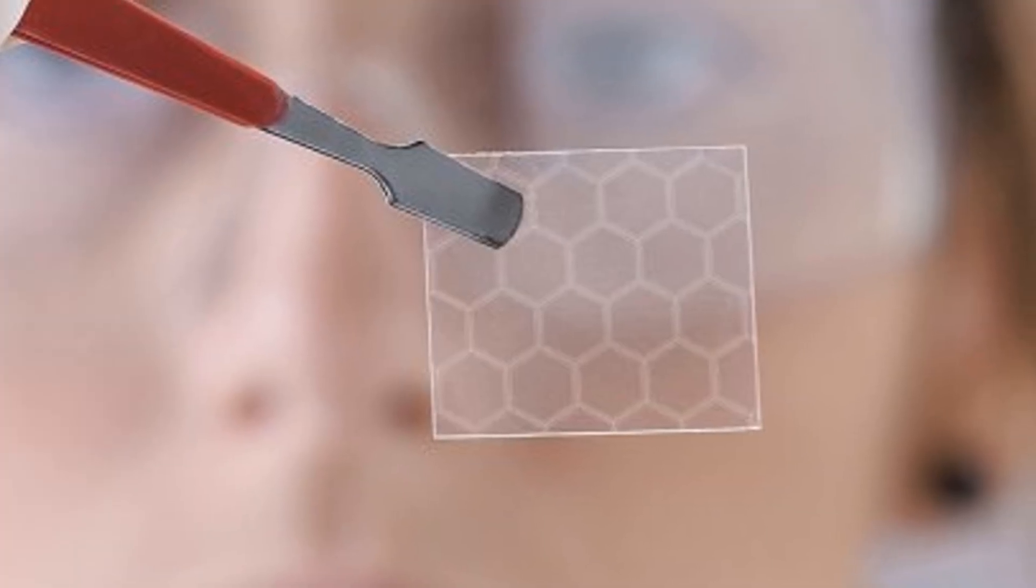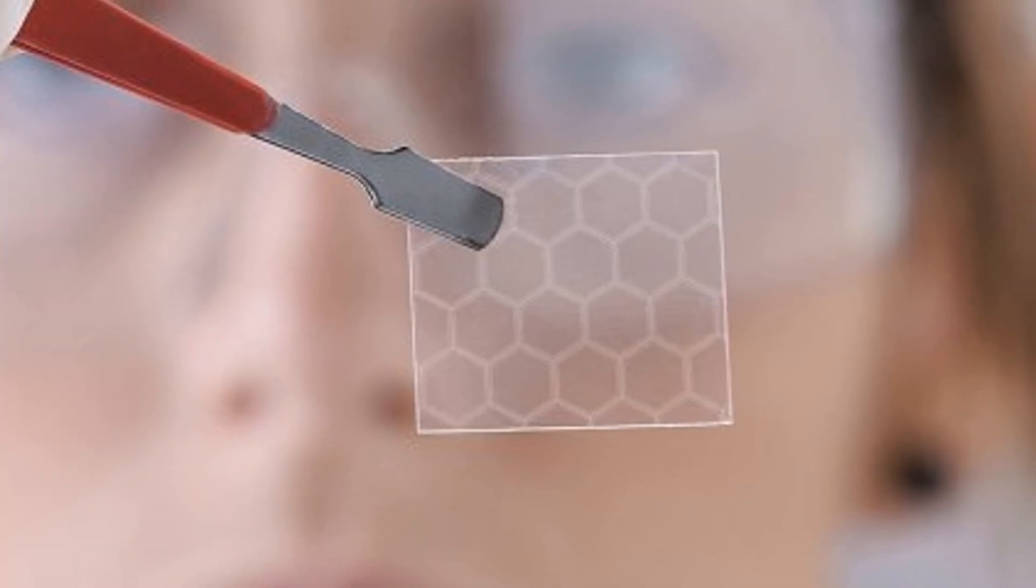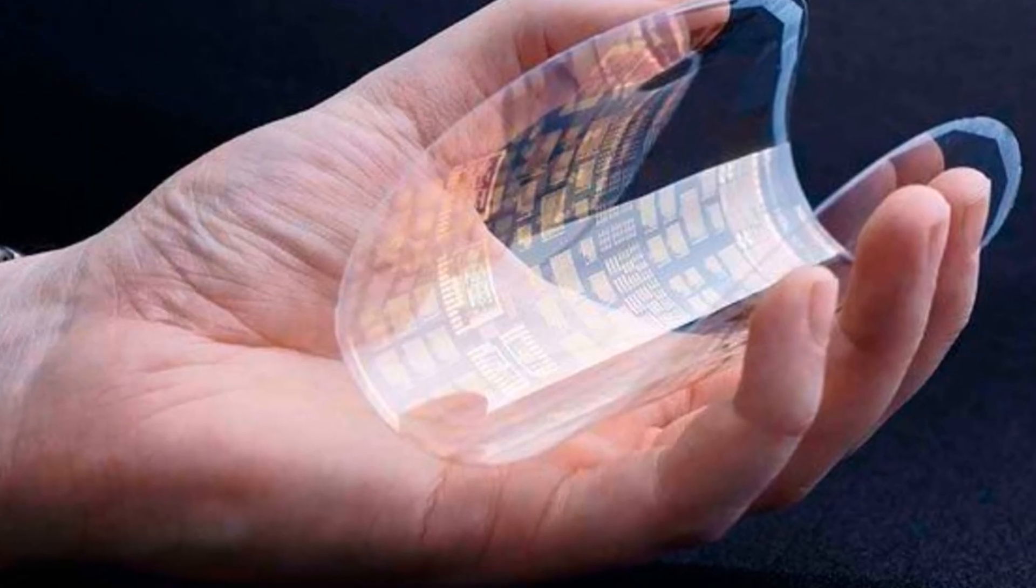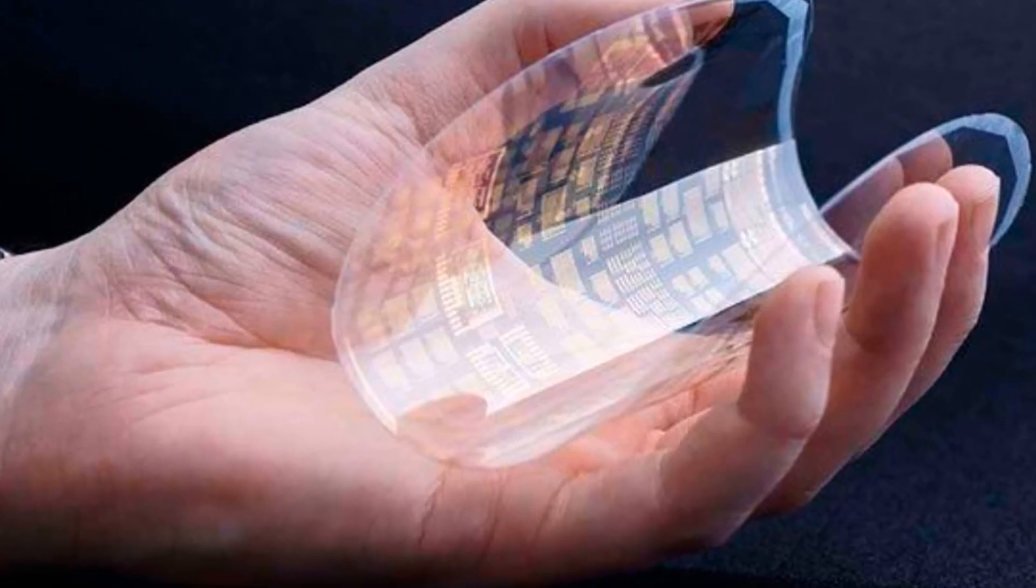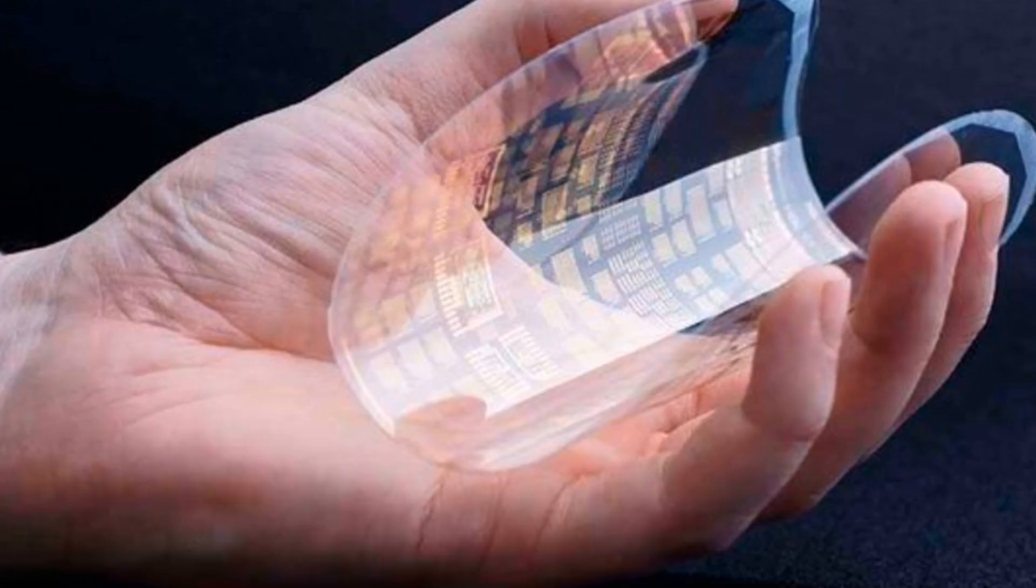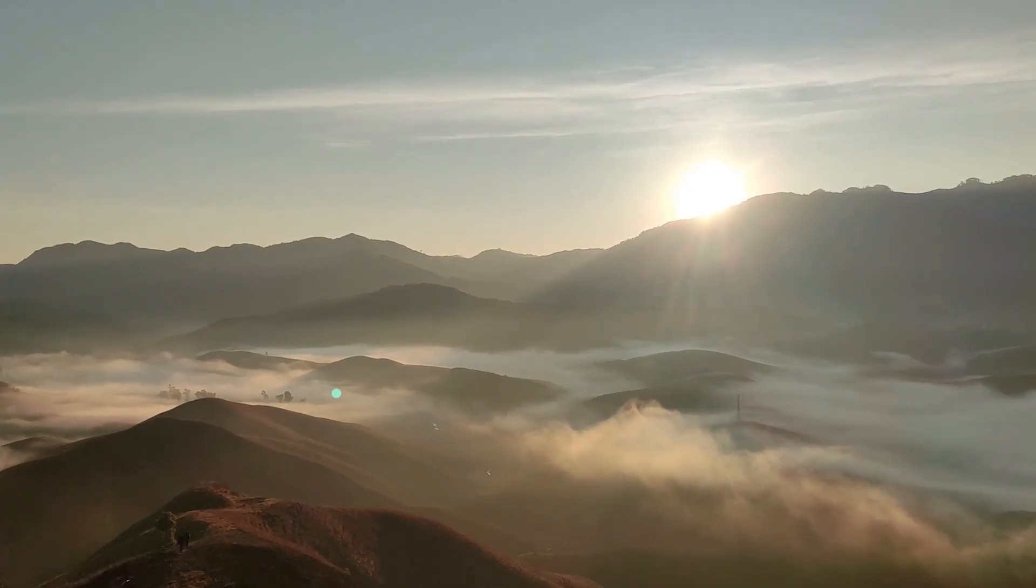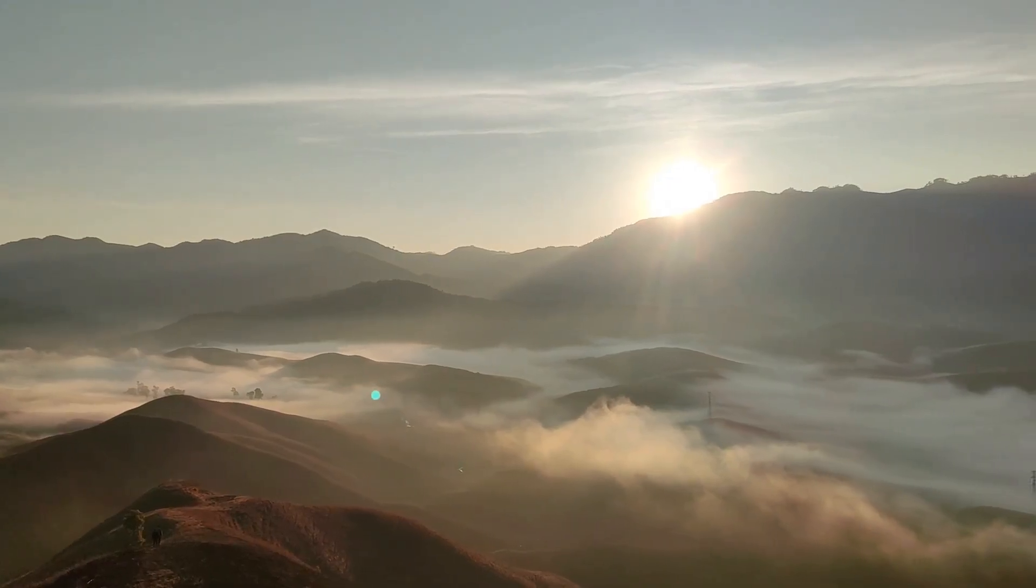Imagine a material so strong that a single sheet as thin as cling film could support the weight of an elephant. That's graphene. This extraordinary strength could revolutionize industries ranging from aerospace to civil engineering. But strength is only the beginning. Graphene's versatility extends far beyond its physical robustness.